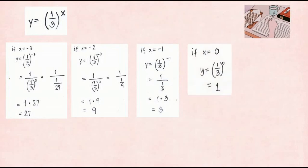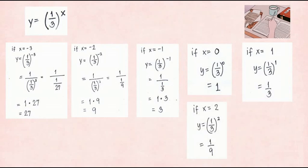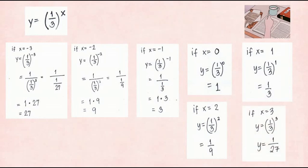Continuing for y = (1/3)^x: when x = 0, y = 1. When x = 1, y = 1/3. When x = 2, y = (1/3)^2 = 1/9. When x = 3, y = (1/3)^3 = 1/27.